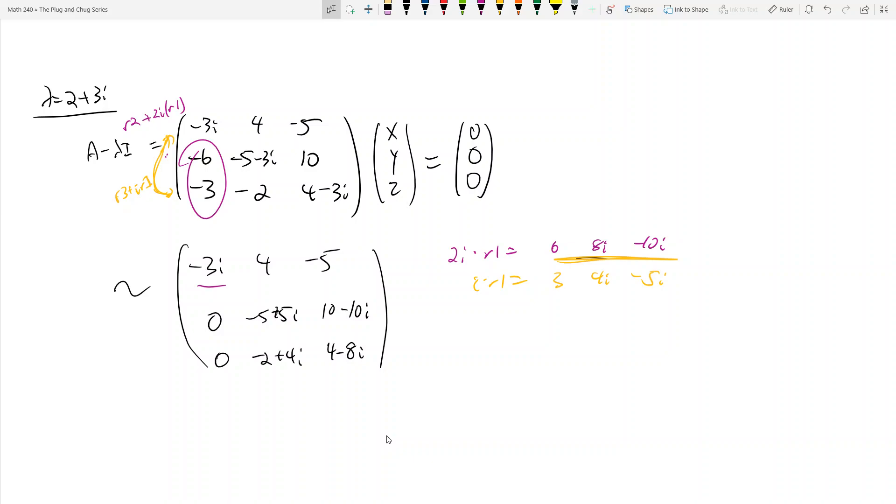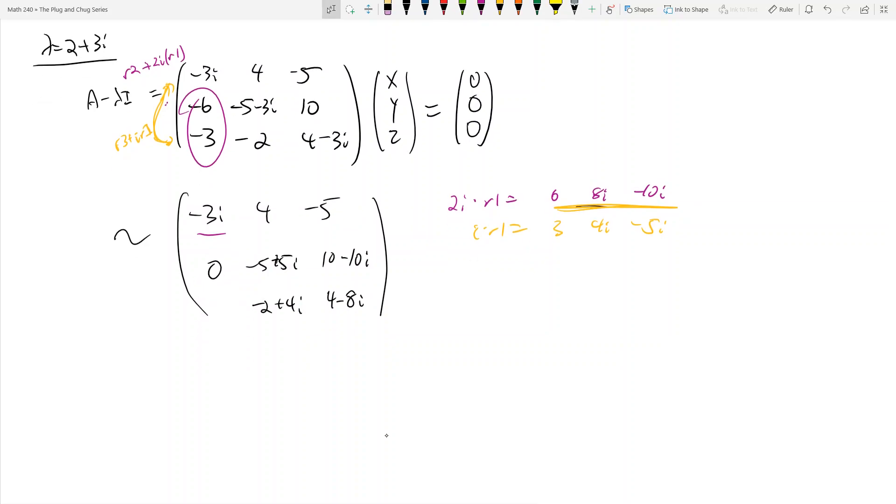So I just row reduced it and got two zeros now. That makes my life a lot easier in assuming what x, y, and z can be in my eigenvector.